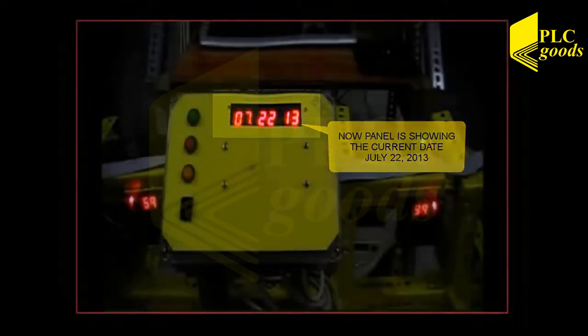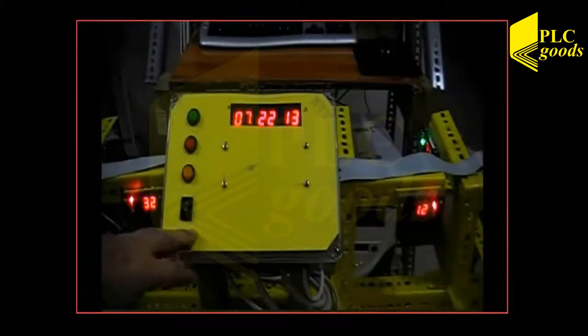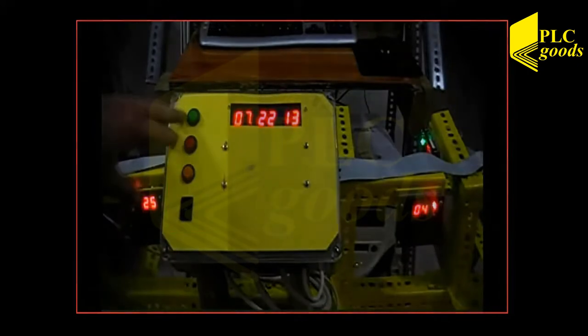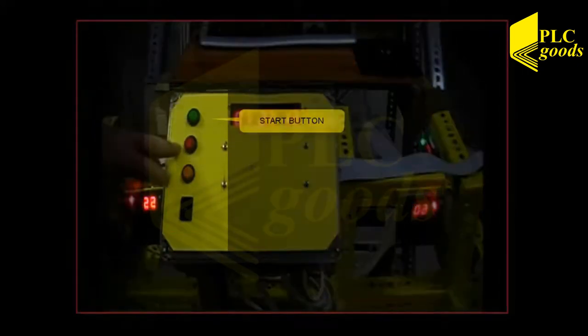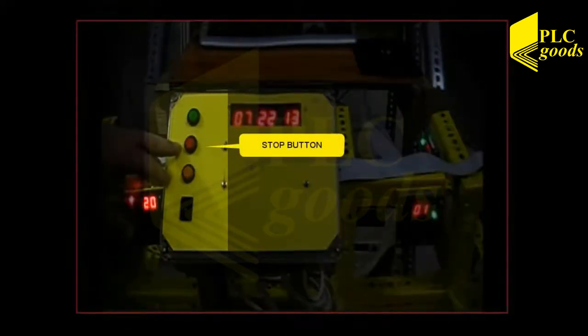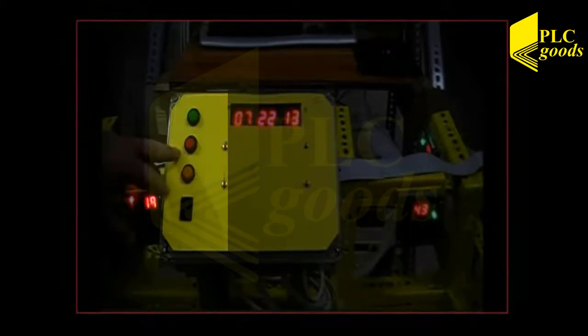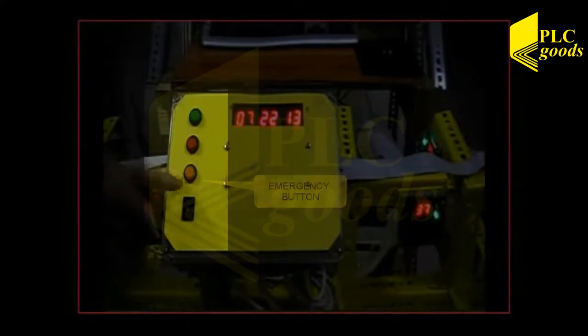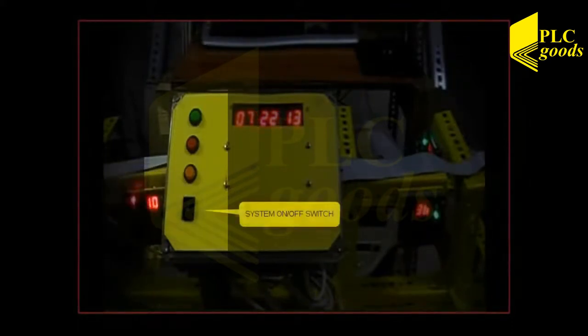Well, this is the control panel of the system and it also has three push buttons and one switch. When you want to start the system at the beginning, just push the start button. To stop the system, this stop button must be pressed, and the yellow push button can be used to go to emergency mode. And the whole system can be turned on or off by the switch.